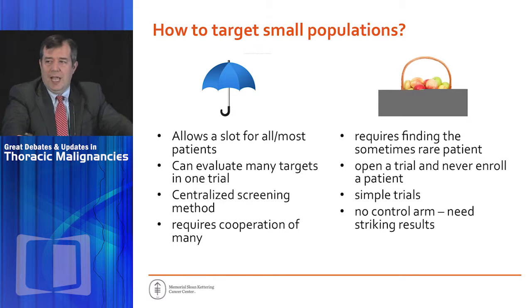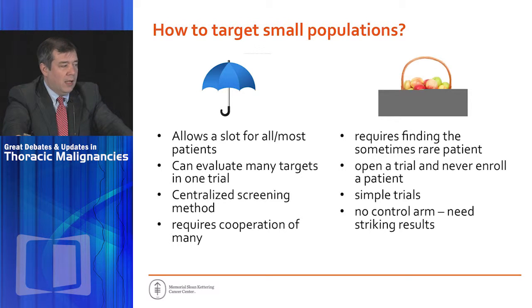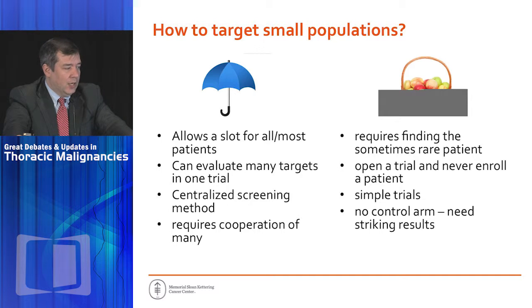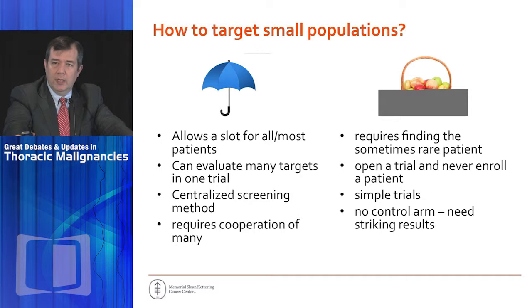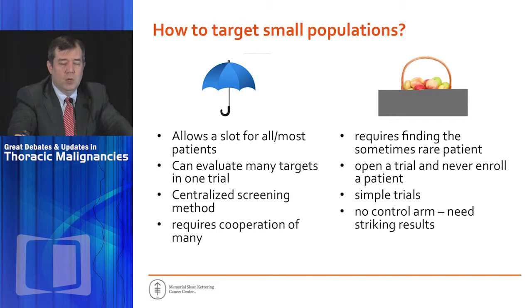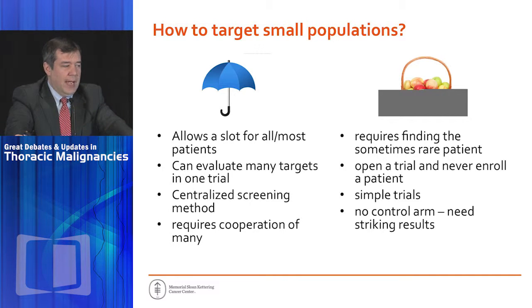An umbrella trial is designed to allow a slot or arm of the trial for almost all patients who enroll. You can evaluate many targets in one trial that way with centralized screening — it's a great asset, but they're complicated, requiring cooperation of multiple sponsors and drugs. The simpler version is the basket trial.